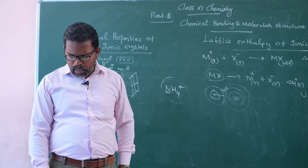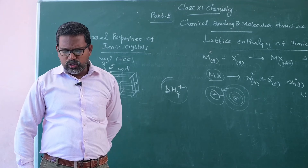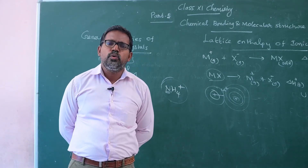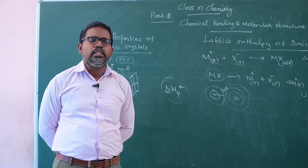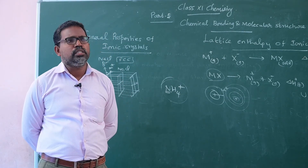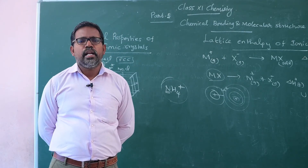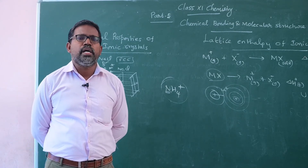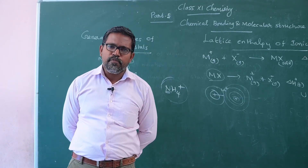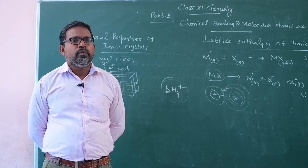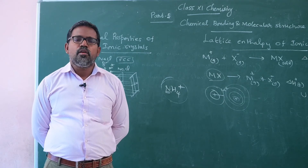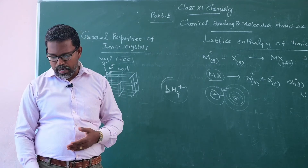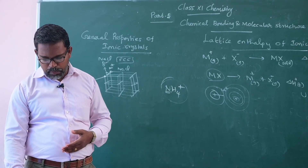The second property is melting and boiling point. Normally, ionic crystals show high melting and boiling points because the cations and anions are held together by strong coulombic force of attraction. Therefore, a large amount of energy is required to break the bond, and it shows high melting and boiling points.